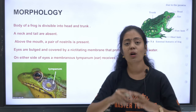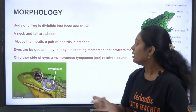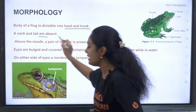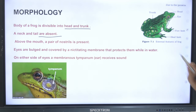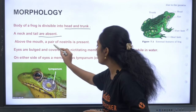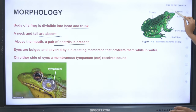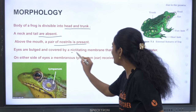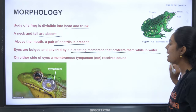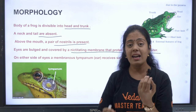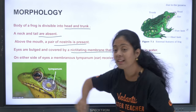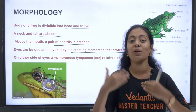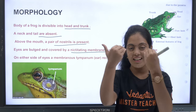The body of the frog is divided into head and trunk. The neck and tail are absent. Above the mouth, a pair of nostrils is present. The eyes are bulged and covered by a nictitating membrane that protects them while in water.